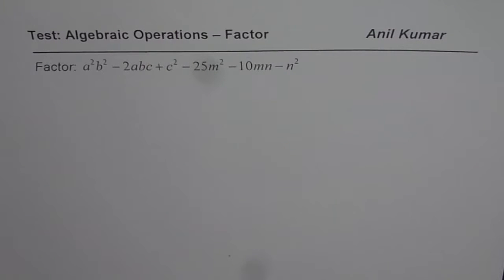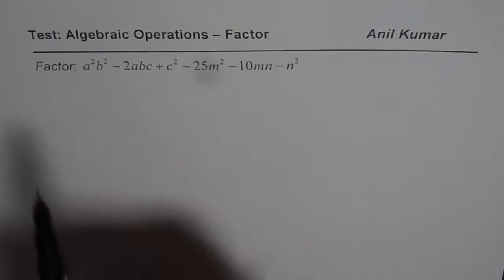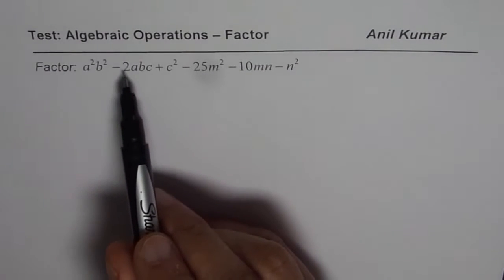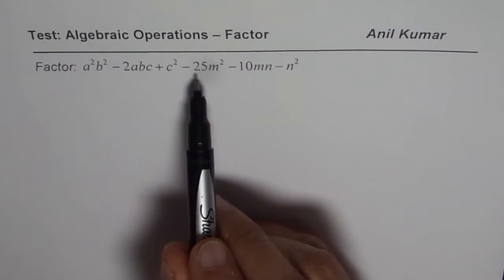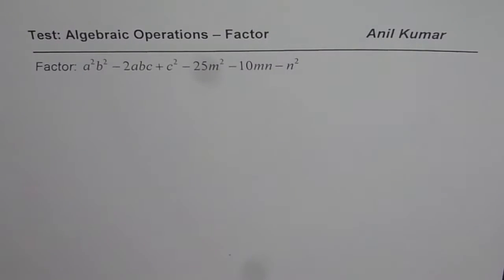I am Anil Kumar. Let us continue with test questions on factoring. This time we have six terms. Let us factor a²b² - 2abc + c² - 25m² - 10mn - n².